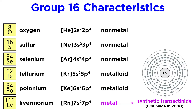Livermorium is yet another synthetic and exceptionally radioactive transactinide element, first created in 2000, whose most stable isotope has a half-life of just 53 milliseconds.